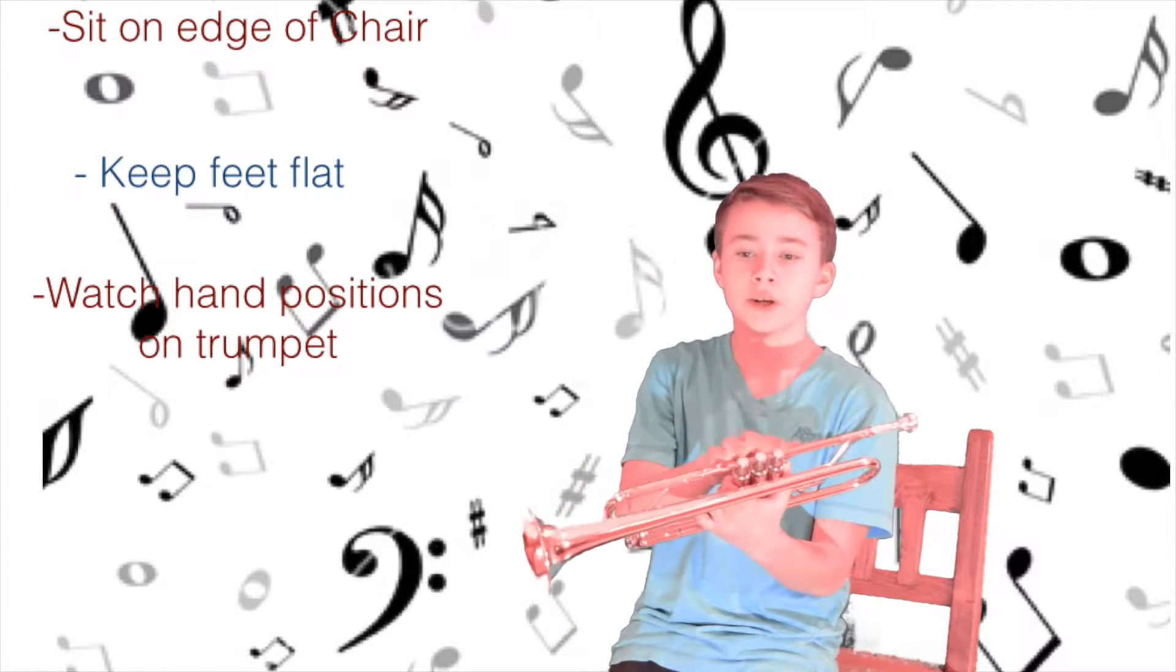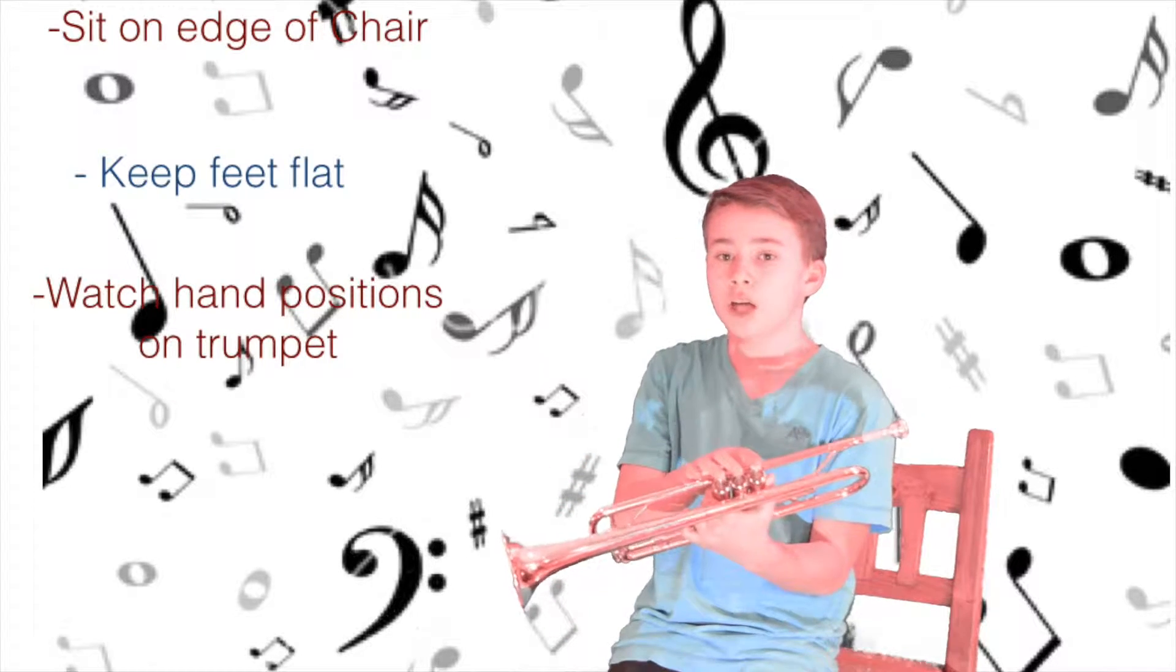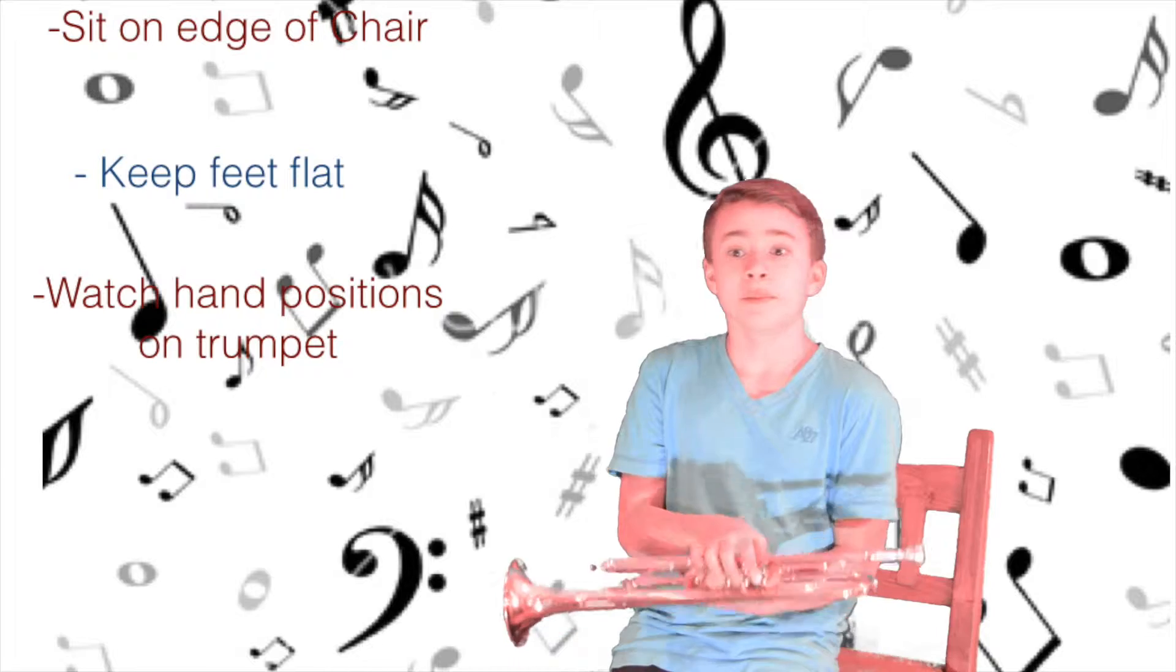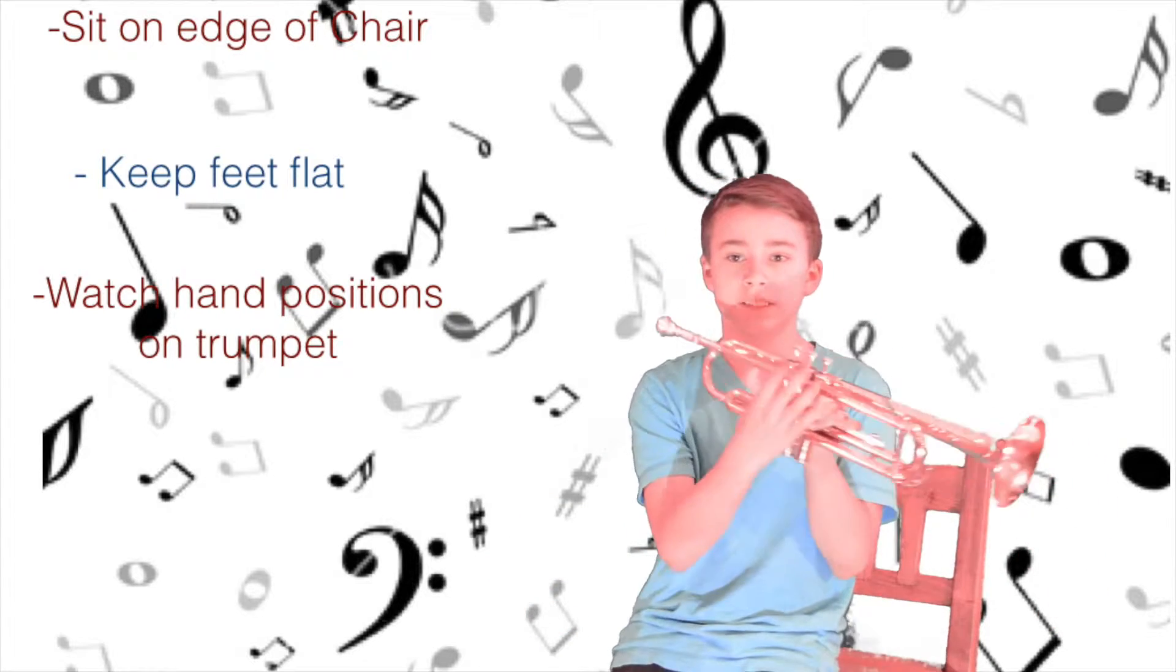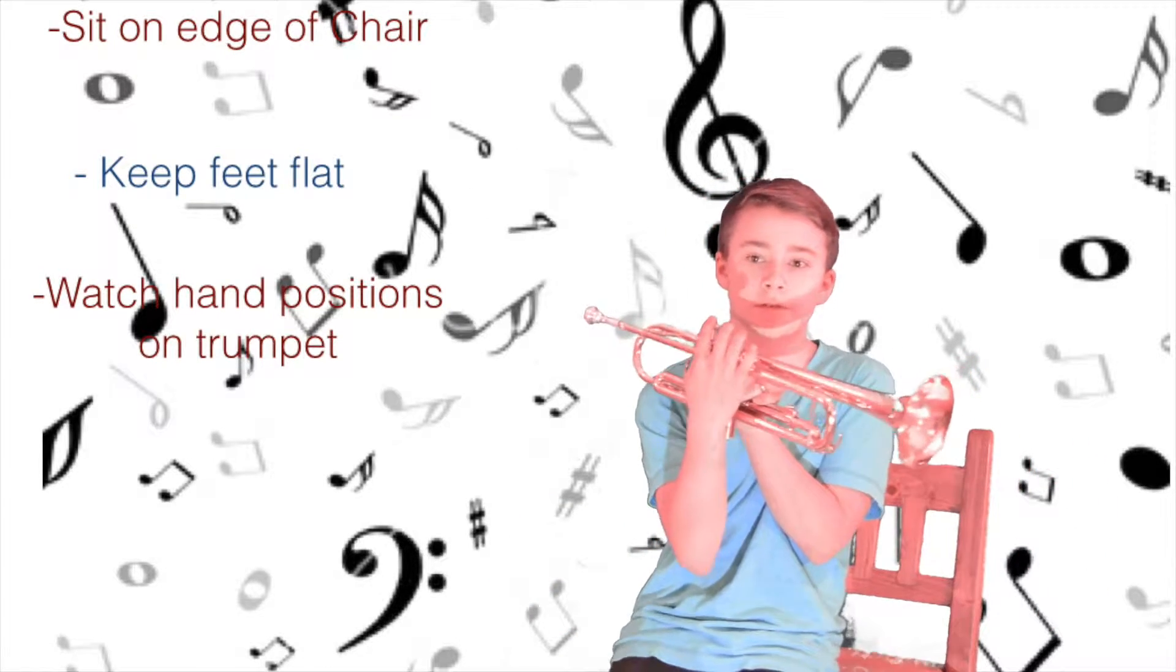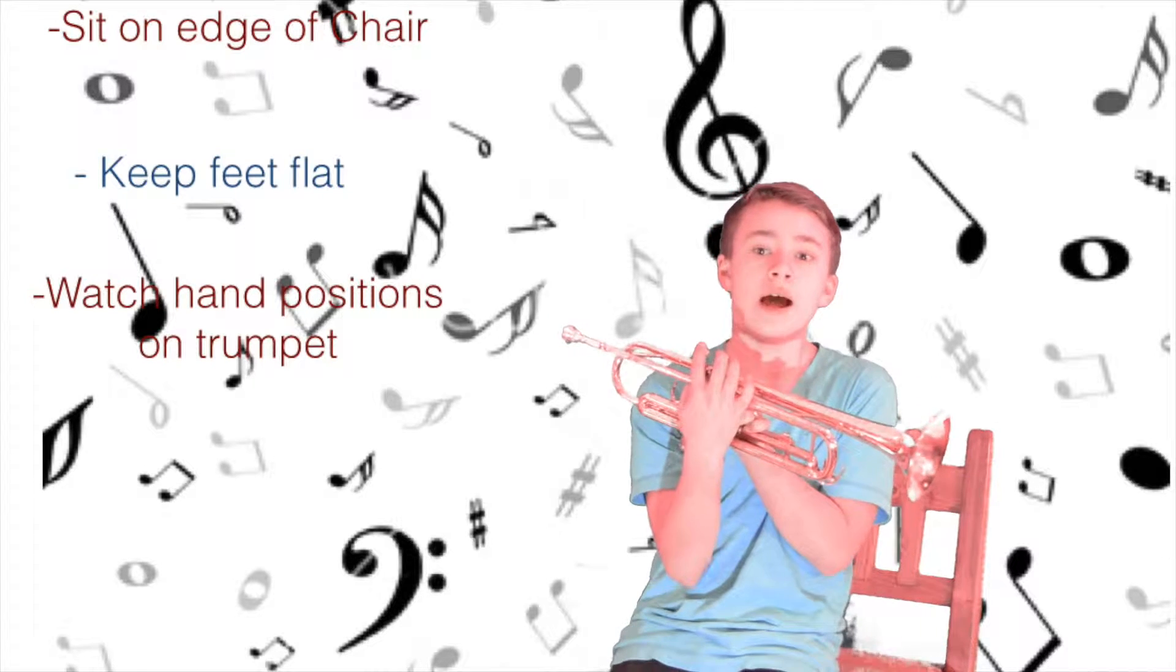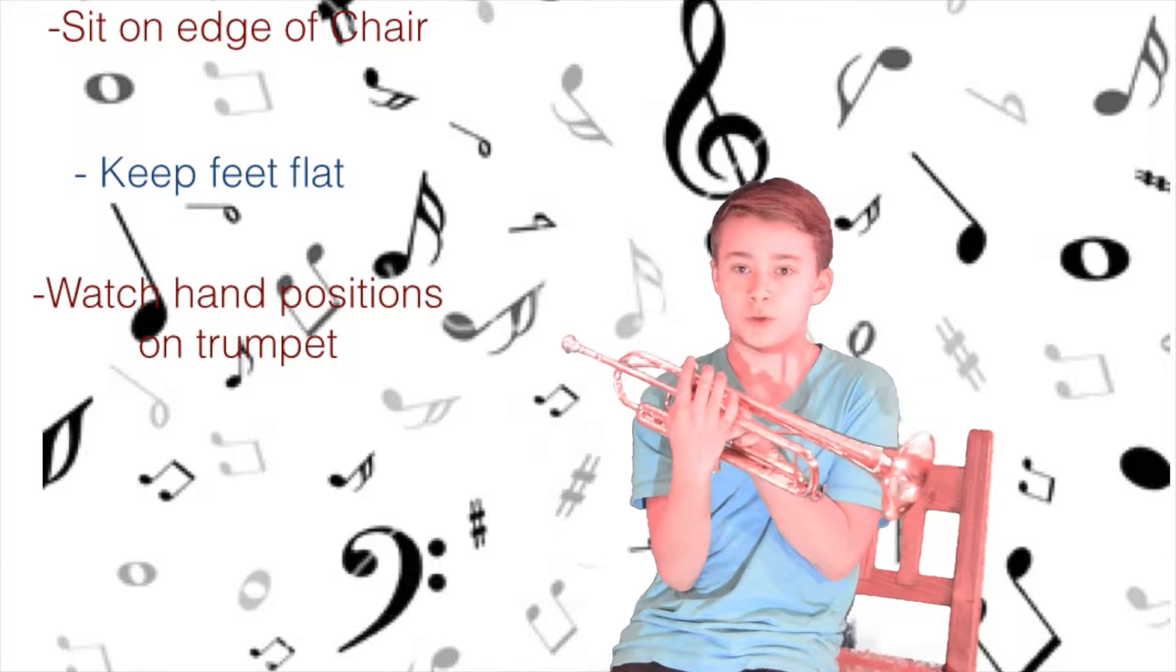With your right hand, place your pointer, middle, and ring finger on top of the valves. Next, place your thumb between the first and second valves and your pinky on top of the finger hook. Putting your pinky on top of the finger hook allows your valve fingers faster movement.